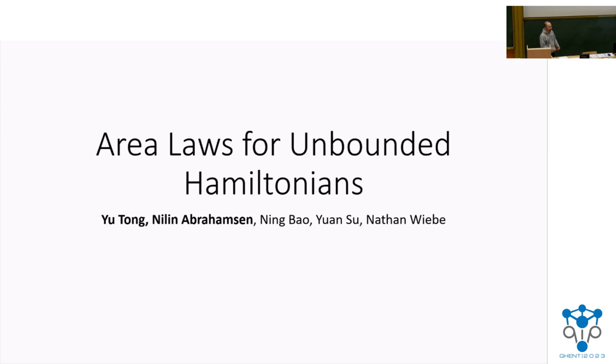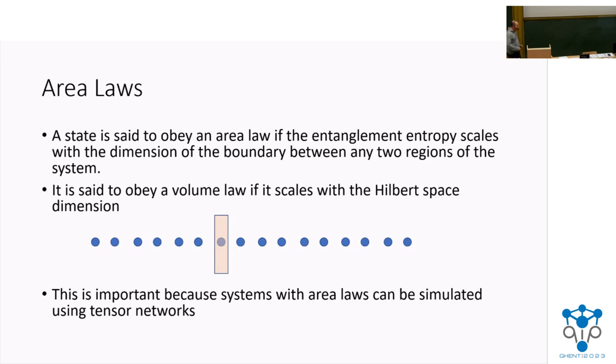But it turns out there was at least one major gap that ended up showing up after taking a look at it for a brief period of time. And this gap doesn't just show up for area laws. It also shows up for Hamiltonian simulations and many other areas. And that problem is we understand how to deal with bounded Hamiltonians really, really well. But when we start dealing with systems that have unbounded Hamiltonians, we run into nightmares. And so our major contribution here is dotting the I's and crossing the T's and showing that for some classes of Hamiltonians that are unbounded, we can still end up getting rigorous area laws in one dimension.